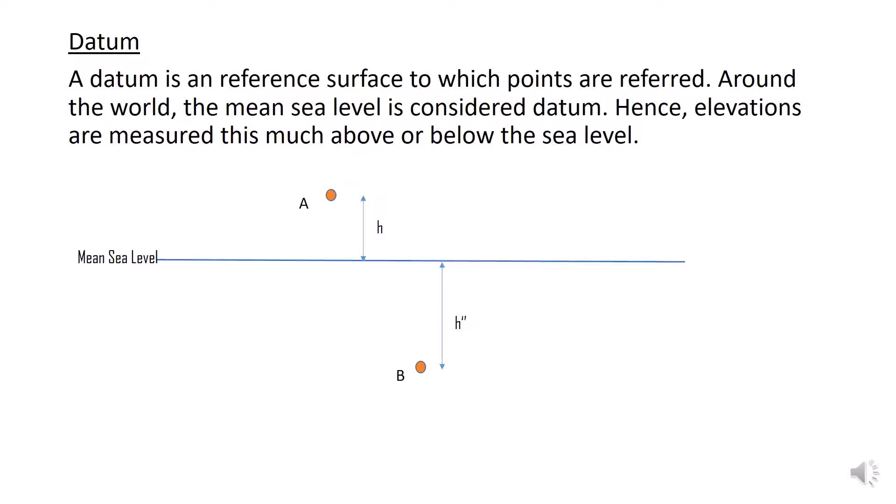Datum is a reference surface — keep in mind that datum is a reference surface, not a reference point or line. It is a reference surface to which any point is referred. Around the world, datum is generally considered as the mean sea level, and this is a complete standardization followed globally. Elevations are measured above or below the sea level — for example, point A may be H distance above mean sea level and point B may be H' below mean sea level.